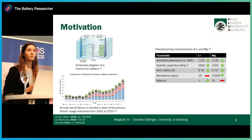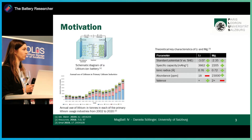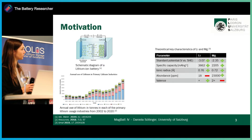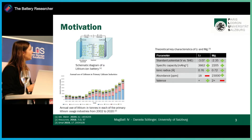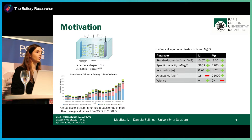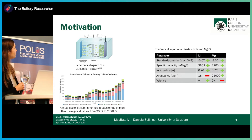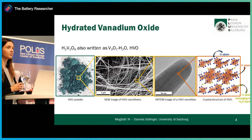However, it is more challenging to design a reversible intercalation of magnesium ions compared to lithium ions because of the double charge. Therefore, the community searches for materials which allow the intercalation of magnesium ions. One of these potential materials is hydrated vanadium oxide.